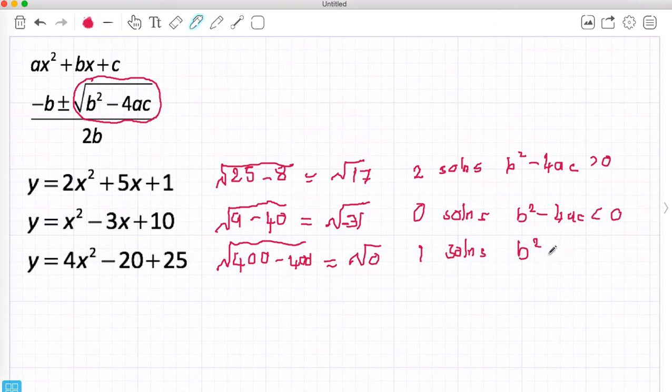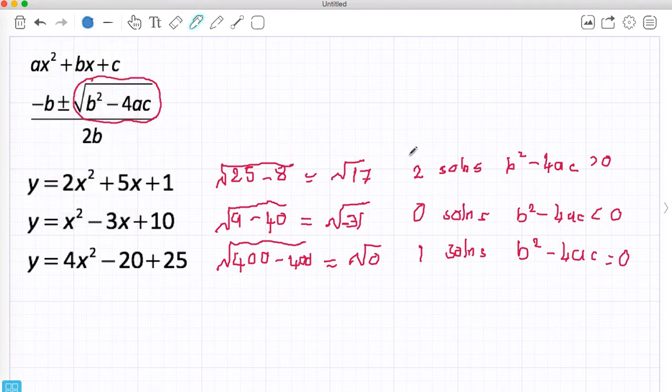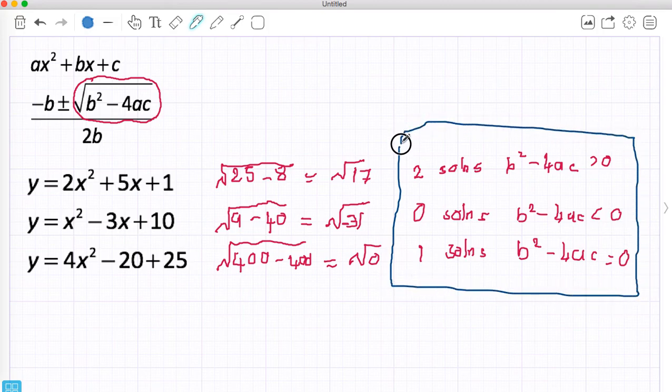This happens where B squared minus 4AC is equal to 0. Now in the next three videos we're going to show an example of how we do a question with each one of these. But this is the most important thing, to understand it's not on the formula sheet, or to remember this bit about the quadratic discriminant.